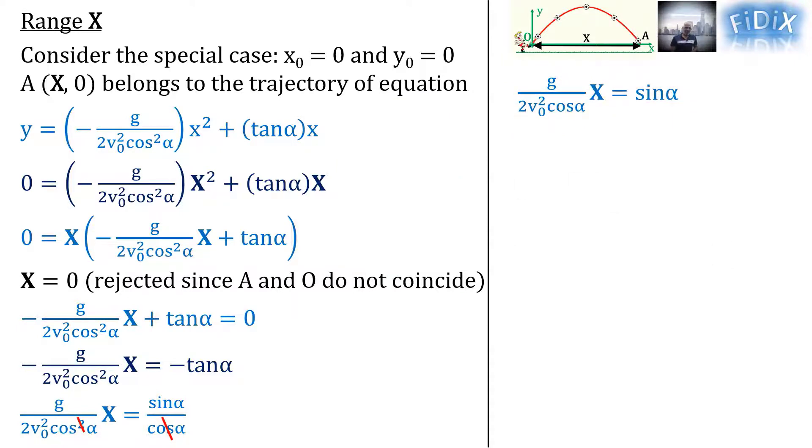And we replace tan α by sin α over cos α. We multiply the two members of the obtained equation by cos α and get X equals 2V₀² sin α cos α over g. Note that cos α is different from zero. We also know that 2 sin α cos α equals sin(2α), so we can replace it in the last equation and get the formula of the range: X equals V₀² sin(2α) over g.